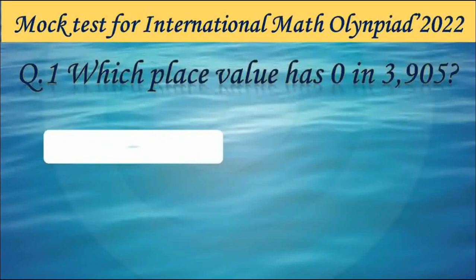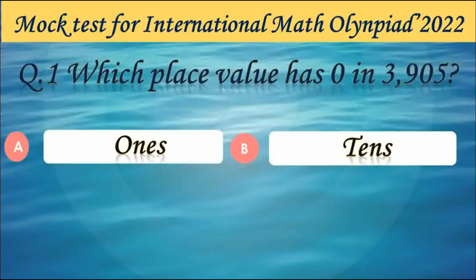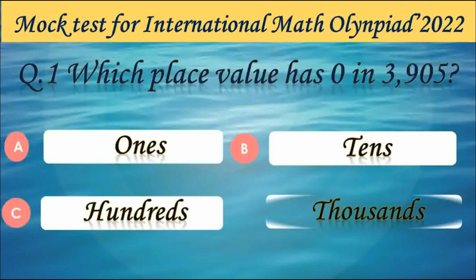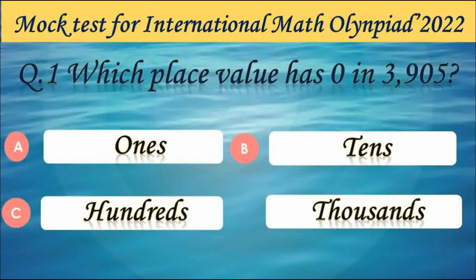Which place value has 0 in 3,905? Options are 1s, 10s, 100s and 1000s. Answer B — 10s.